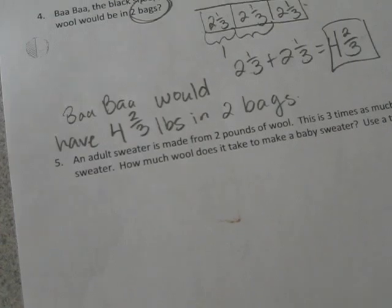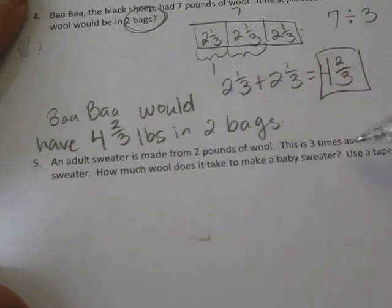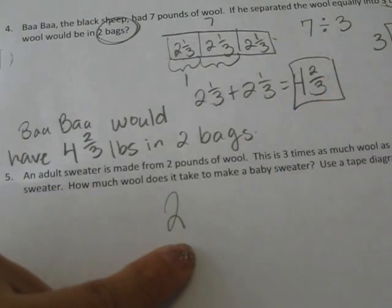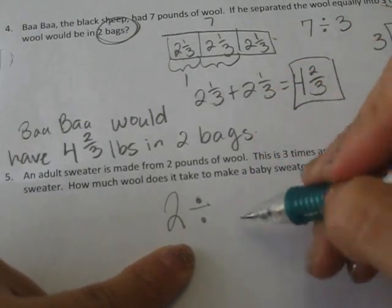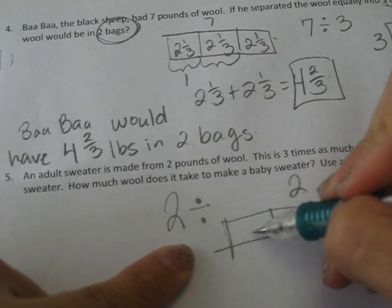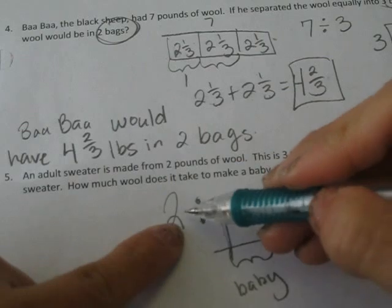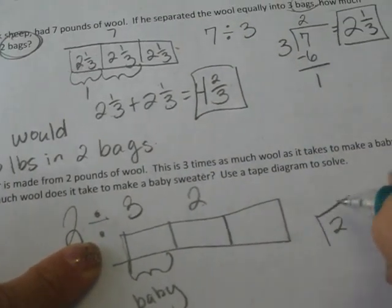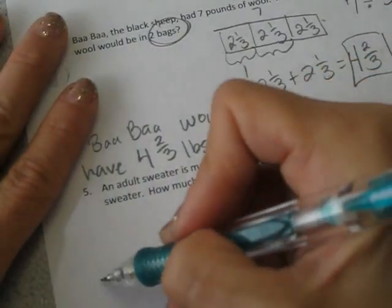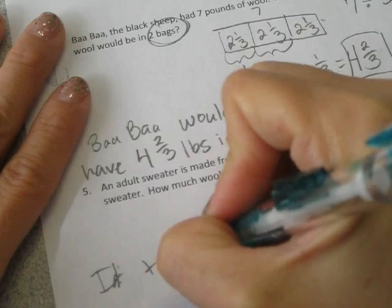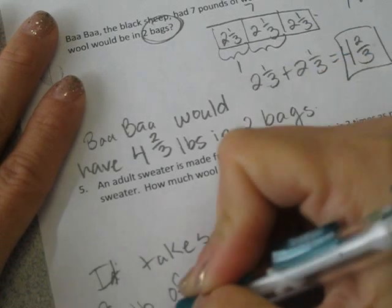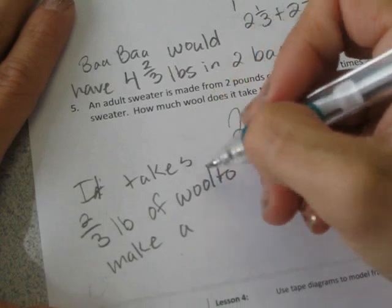And number 5, an adult sweater is made from 2 pounds of wool. This is 3 times as much wool as it takes to make a baby sweater. How much wool does it take to make a baby sweater? Well, 2 pounds for adult, which is 3 times as much to make an adult. So if we divide that, or we can do it this way with our tape diagram, we need 2 pounds for the adult sweater. But if we break that up into thirds, this would be the amount for the baby sweater. So divide 2 divided by 3. I can show my work here. 2 divided by 3, which is 2 thirds. So it actually takes, sorry, it takes 2 thirds pounds of wool to make a baby sweater.